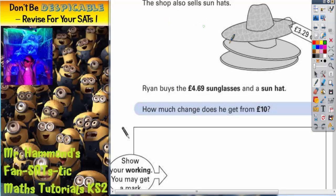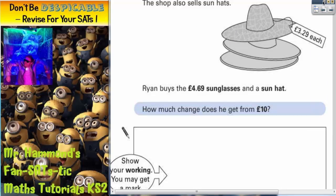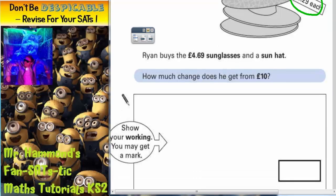It says the shop also sells sun hats, so this hat is £3.29 each. Ryan buys the £4.69 sunglasses and a sun hat at £3.29. How much change does he get from £10?